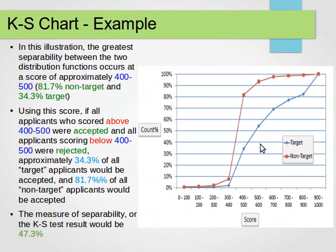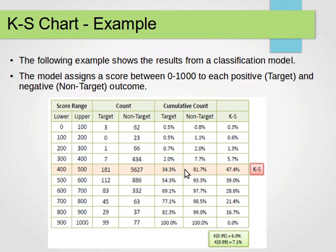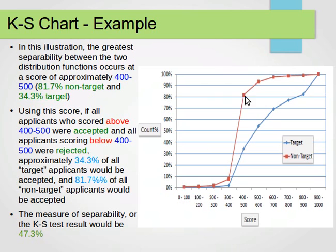We want to find the greatest vertical distance between the two distributions — target and non-target. The greatest vertical distance occurs at the score interval between 400 and 500, as you can see in the chart. We are concerned about the vertical separation between the blue (target) and red (non-target) lines. The greatest separability between the two distribution functions occurs at a score of approximately 400–500.